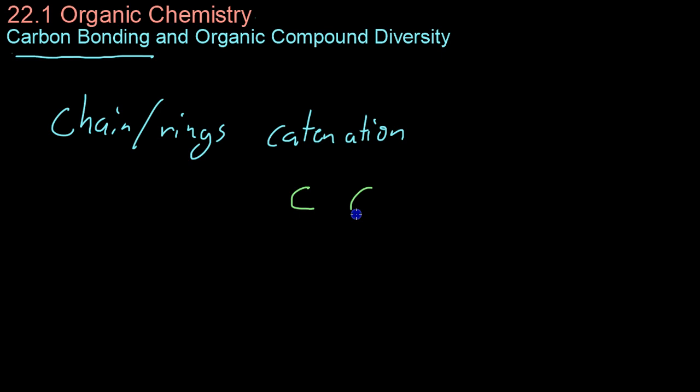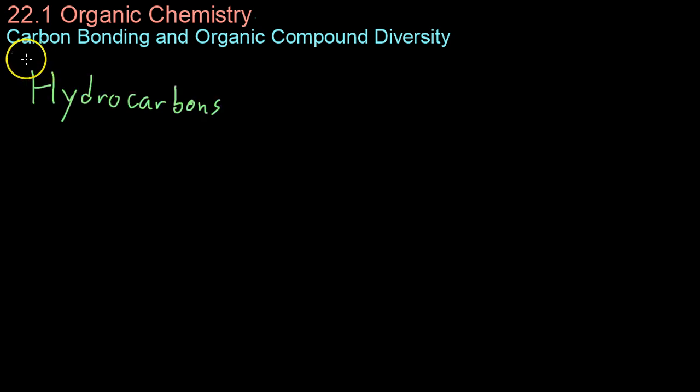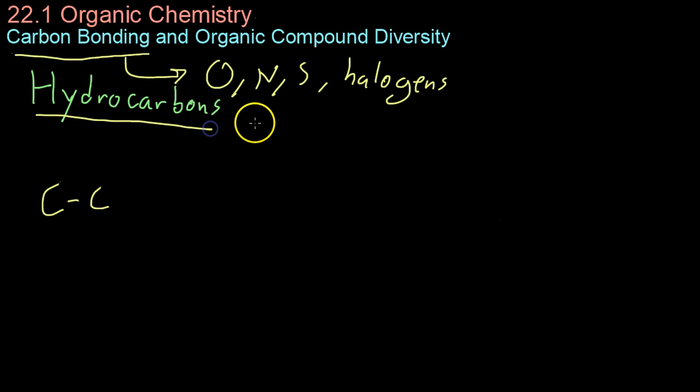In this catenation process, carbon can bond to itself with a single bond, a double bond, or even sometimes a triple bond. Aside from carbon to carbon bonding, this carbon bonding affects all the elements near carbon that have similar electronegativity. For example, carbon can bind to oxygen, nitrogen, sulfur, and any of the halogens. The simplest carbon compounds we're going to look at are hydrocarbons, which are composed solely of some number of carbons and some number of hydrogens.